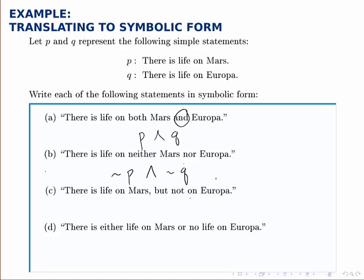Part C says, there is life on Mars, so that would be P, but not on Europa. In these logical statements, the word but often means the same thing as the word and. So this is the same as saying, there is life on Mars and there is not life on Europa. So P and not Q. There is life on Mars and there is not life on Europa.